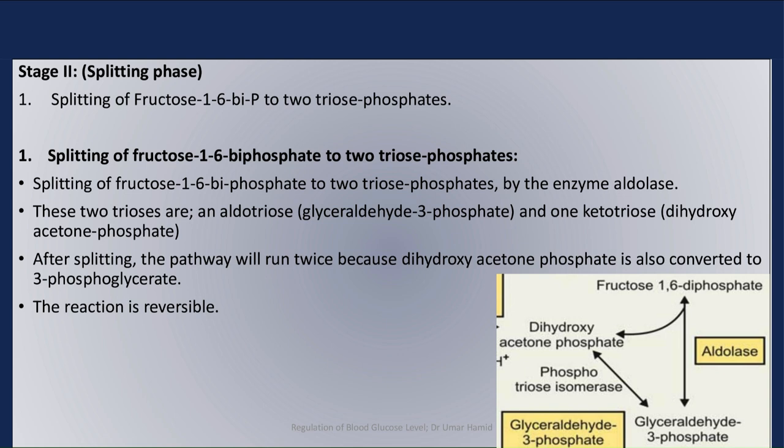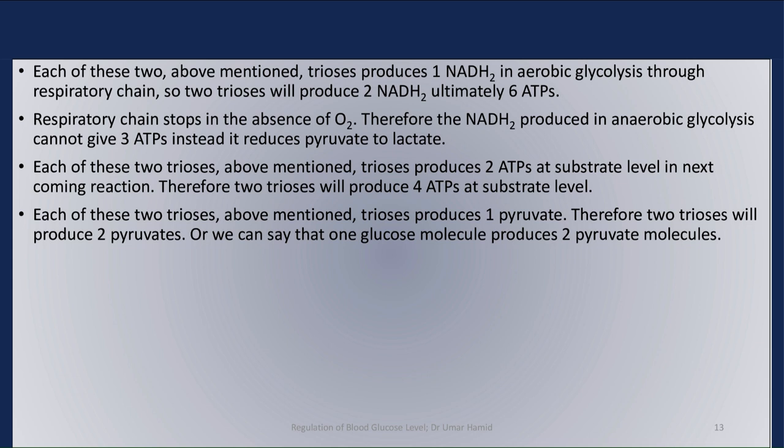Each of the two trioses produces 1 NADH₂ in aerobic glycolysis through the respiratory chain, so two trioses will produce 2 NADH₂, ultimately yielding 6 ATPs. The respiratory chain stops in the absence of oxygen. Therefore, the NADH₂ produced in anaerobic glycolysis cannot yield 3 ATPs; instead, it reduces pyruvate to lactate.